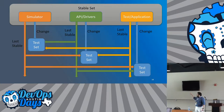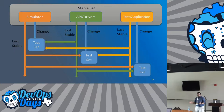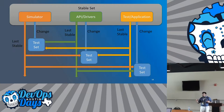At that point, if you need to take changes into any one of these three blocks, you take the last stable builds from the other two blocks and run it to get the next stable set. When the run is complete, if the test set passes, you can promote those builds as a stable set and move forward from there.